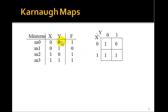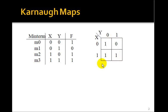Consider this truth table where we have min terms M0, 1, 2, and 3. Suppose the output is 1, 0, 1, 1. I can draw this truth table in a different form by drawing a square and labeling the rows as x — x is 0, x is 1 — and labeling the columns y, so y is 0 and y is 1.